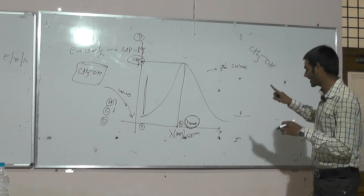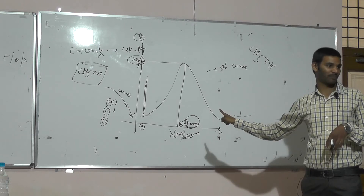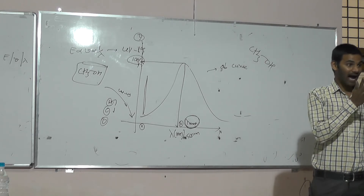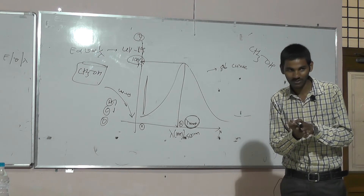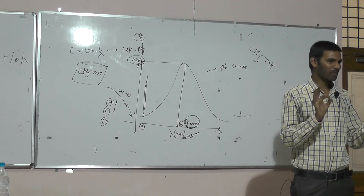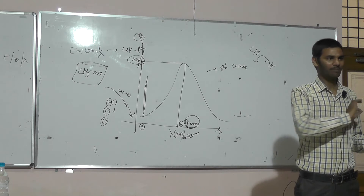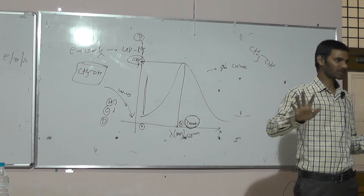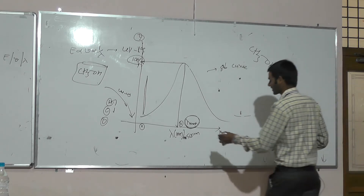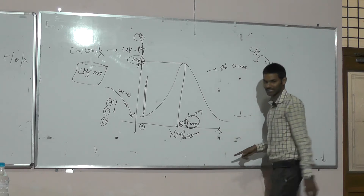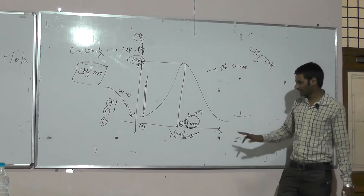Because of its qualitative purpose, we can compare the unknown compound's lambda max with a known compound. Lambda max value is always used as qualitative only, not for quantitative purpose. It is a characteristic and qualitative aspect.